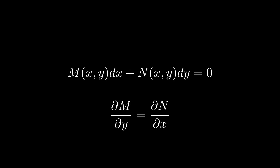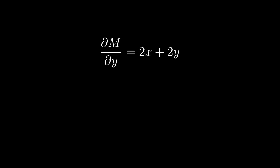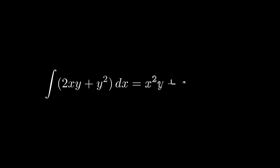The standard routine is to check if those partial derivatives are the same. We take the derivative of M with respect to y and get 2x + 2y, and the derivative of N with respect to x also gives 2x + 2y — so we have an exact ODE.